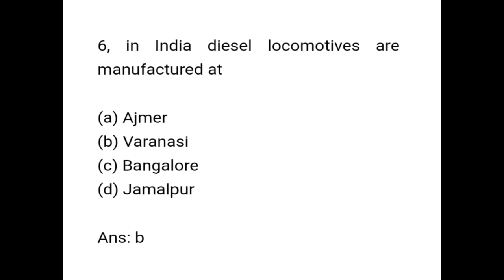Question 6: In India, diesel locomotives are manufactured at — Ajmer, Varanasi, Bangalore, Jamalpur. Correct answer is option B: Varanasi. In India, diesel locomotives are manufactured at Varanasi.